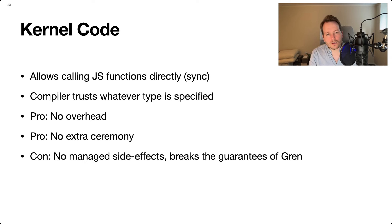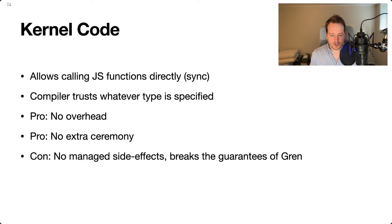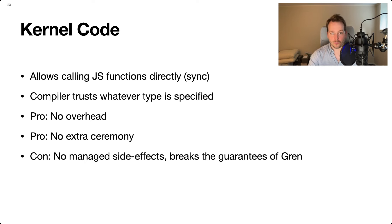Kernel code is very different. Kernel code allows you to call JavaScript functions directly in a synchronous manner, and the compiler simply trusts that the kernel code implementation is correct. So if you're calling a function and you're saying it takes ints, the compiler will just take your word for it. The benefit is that there is no overhead — calling a function implemented with kernel code is the exact same thing as calling a JavaScript function. But the problem is that there are no managed side effects: kernel code can perform mutation, it can throw an exception, it can return a value which will blow up when you access a field on it. There are no guarantees that after calling kernel code your program will continue to work.